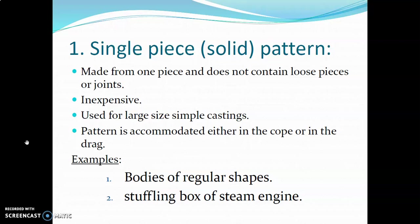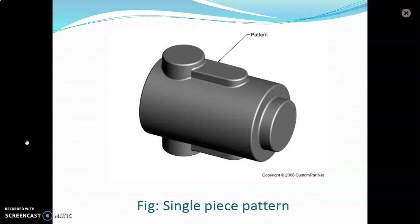Other examples of single piece patterns include an air compressor frame. As you can see here, we have a single piece pattern in which you will not find any joint or any loose piece. It is very simple.